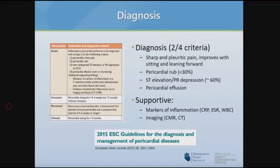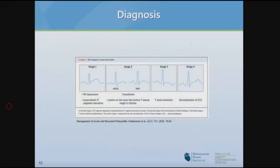There are ESC guidelines to help make the diagnosis using clinical criteria. Pericarditis pain is typically pleuritic, sharp, and better when sitting up or leaning forward. The criteria include: presence of a rub, EKG changes with ST elevation and PR depression (present in about 60 percent of patients), and presence of pericardial effusion. Two out of four criteria are needed for the diagnosis, supported by inflammatory markers such as CRP, ESR, white count, and imaging.